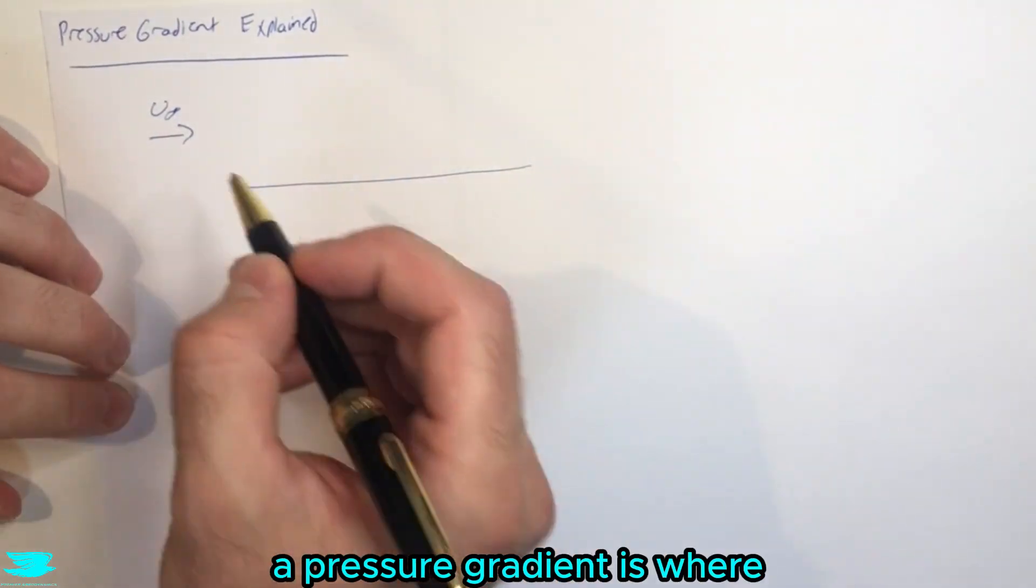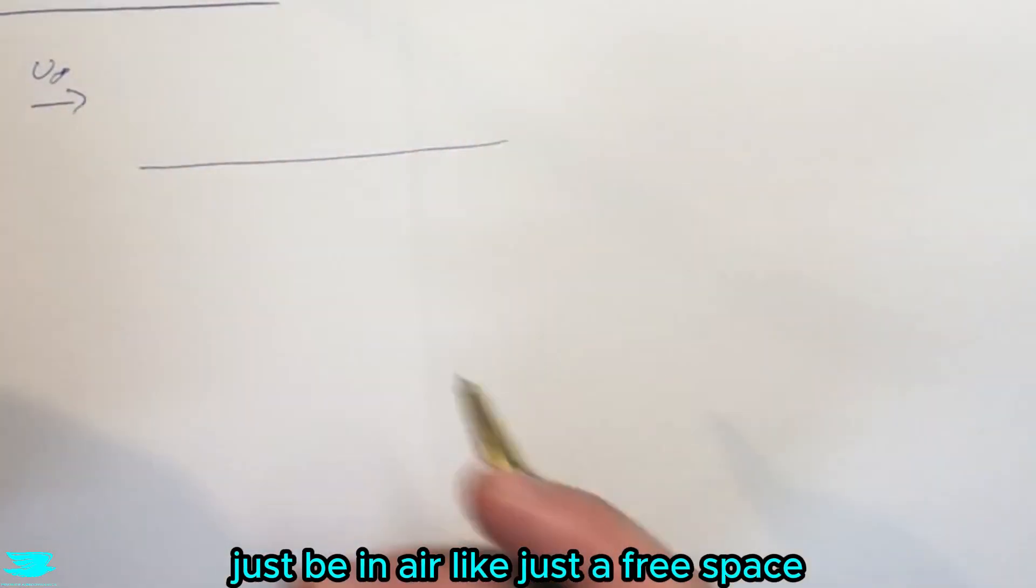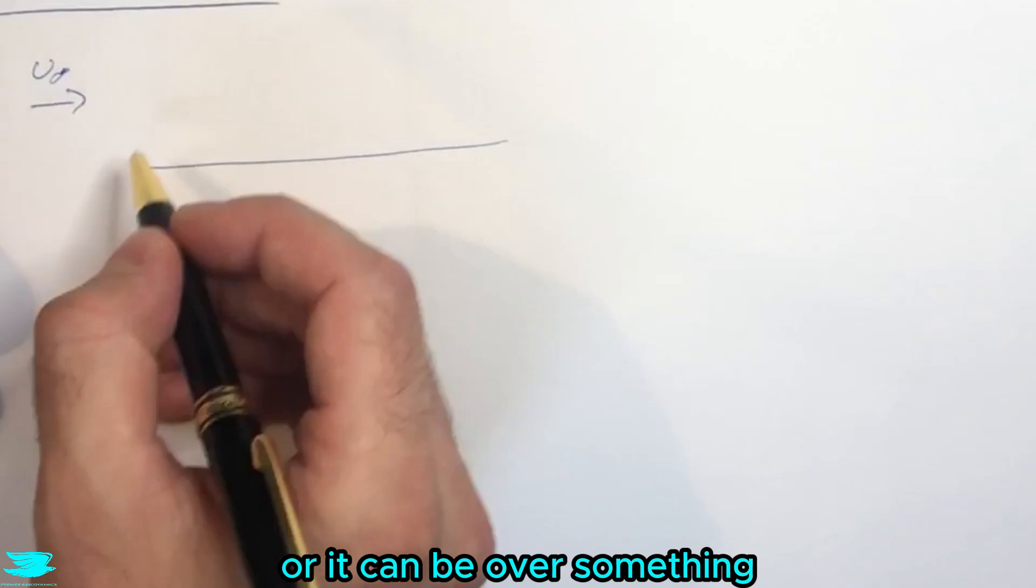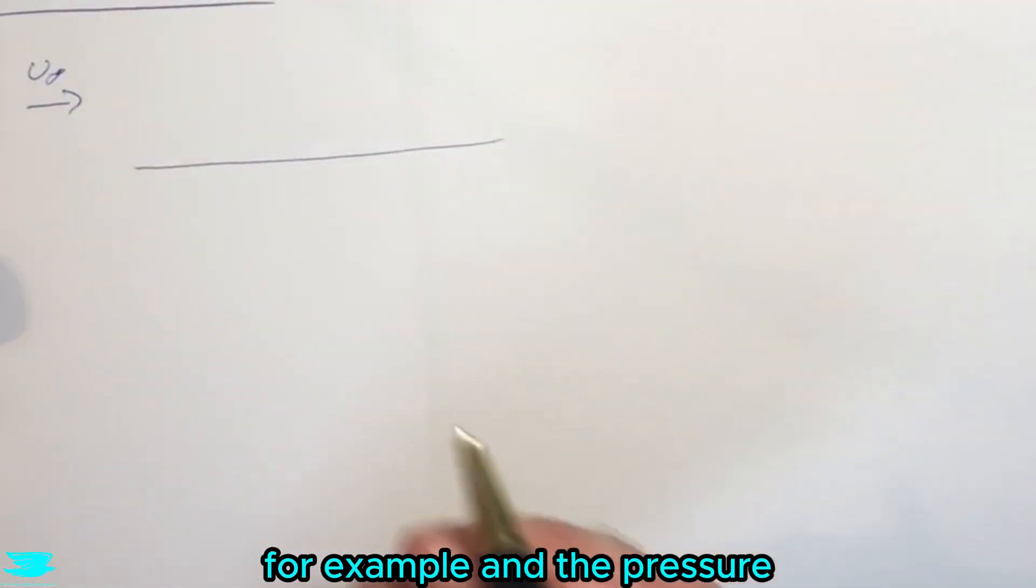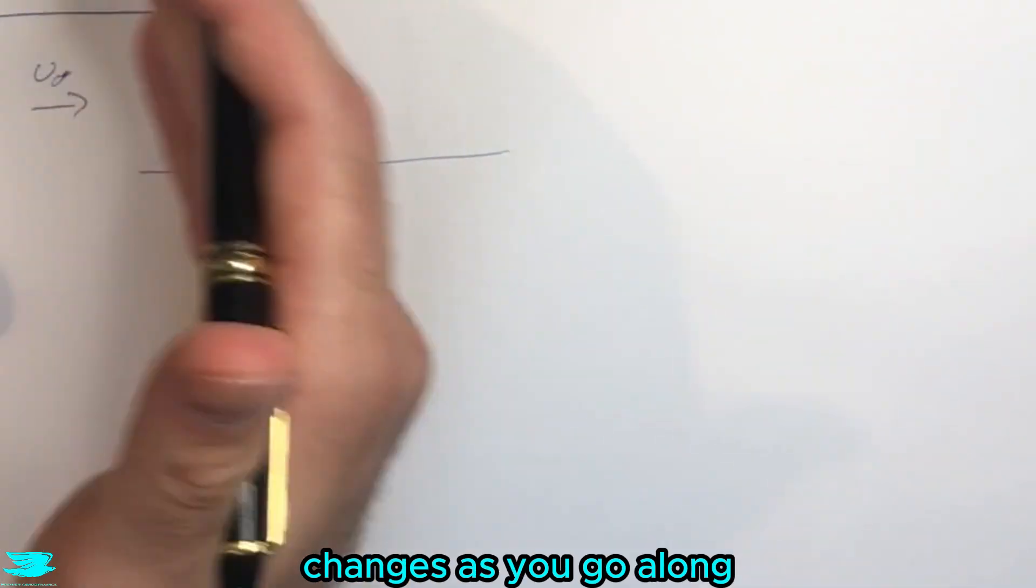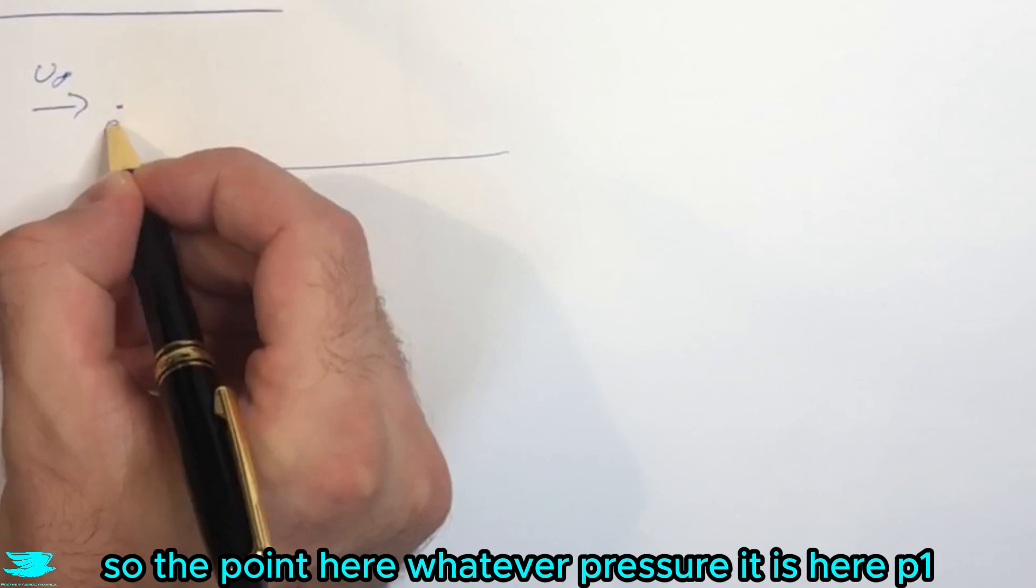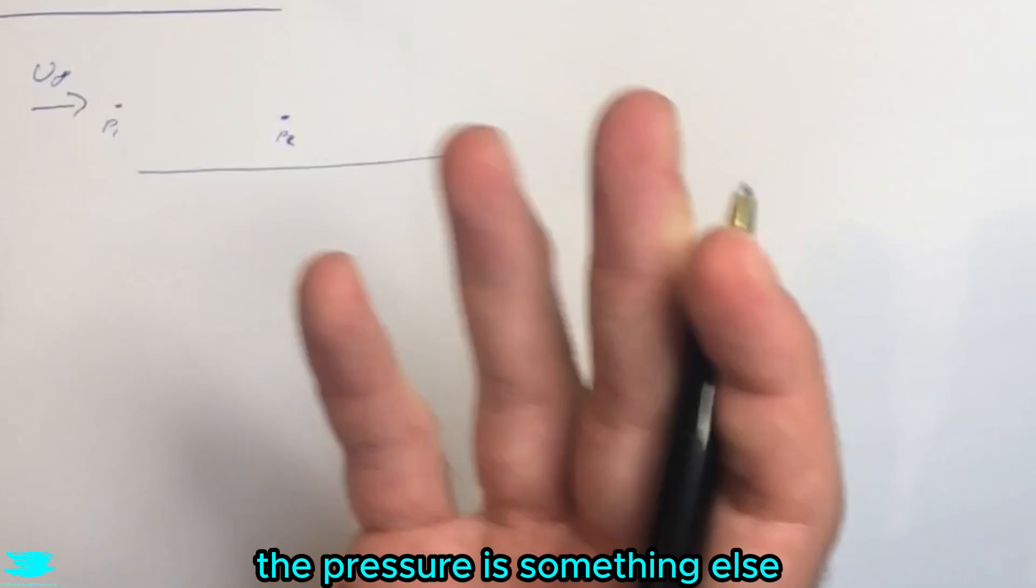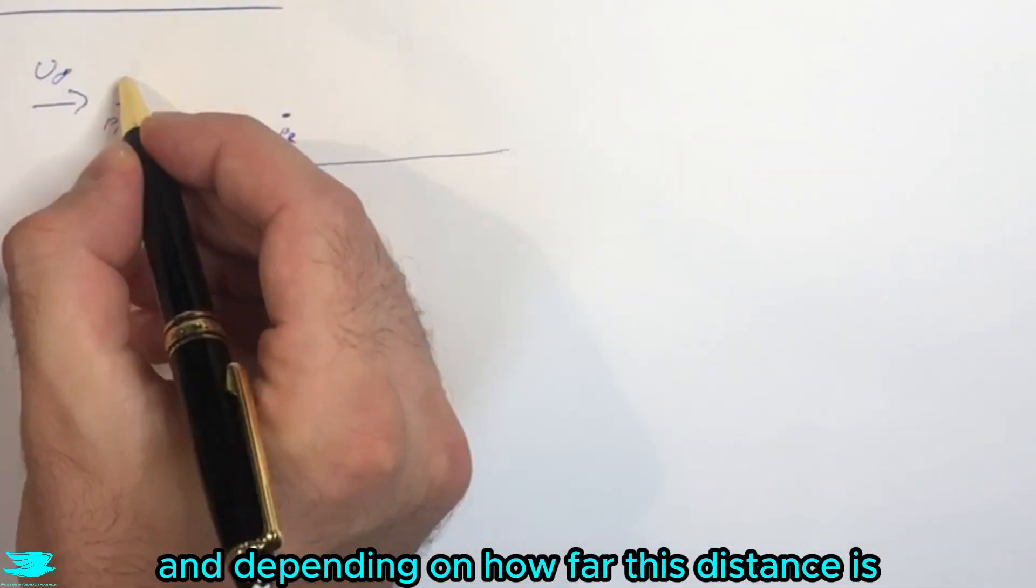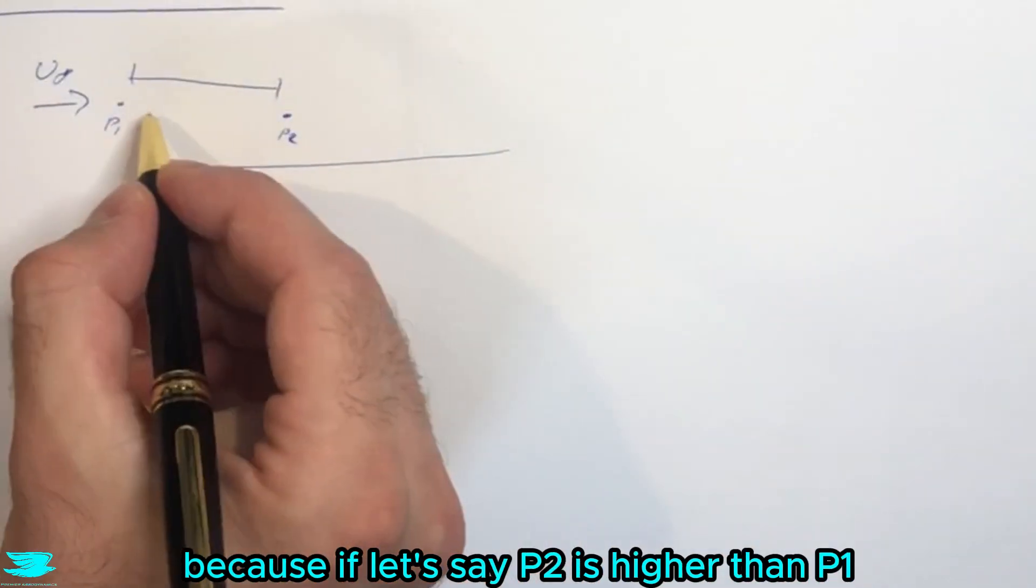First of all, a pressure gradient is where you have the flow going along somewhere - it doesn't need to be over anything, it can just be in air like free space, or it can be over something or in a space if you have a channel. The pressure changes as you go along. At one point the pressure is p1, then at the next point p2 the pressure is something else, and depending on how far this distance is, that creates a pressure gradient.